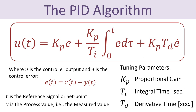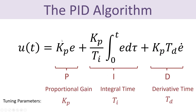Here you see the basic PID algorithm. This PID controller is the most used controller in control systems today. That's because it is very easy to use, easy to implement, and has very few tuning parameters — three tuning parameters: Kp, which is the proportional gain; Ti, the integral time; and Td, the derivative time. This PID controller consists of three parts: the proportional part, the integral part, and the derivative part. Each of those parts combined makes a very great controller for controlling all kinds of processes.